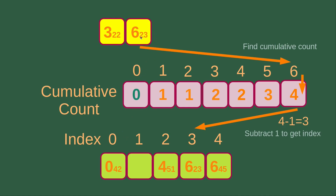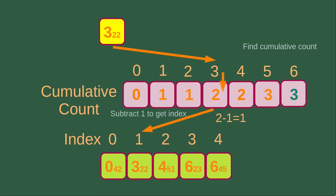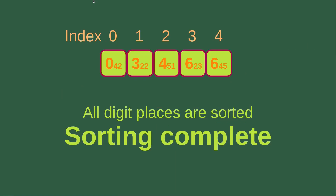Then I handle the next number, which is 623. For number 6, the cumulative count is now 4. Subtracting 1 from 4 gives 3, so 623 goes to index number 3. I update the cumulative count of element 6 to 3. Finally, I handle 322. Element 3 has a cumulative count of 2. Subtracting 1 gives 1, so 322 goes to index number 1. After sorting each of the digits, the numbers are sorted, and we have already sorted all the digit places, confirming that sorting is now complete.